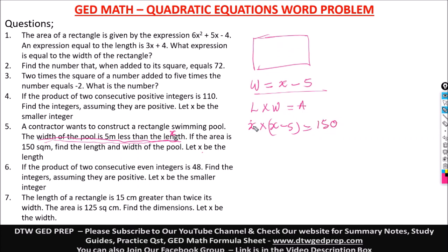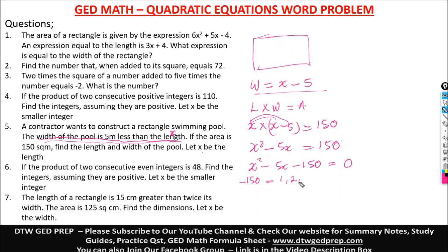Using L × W = Area: x(x - 5) = 150. Distributing: x² - 5x = 150. Bringing 150 to the left: x² - 5x - 150 = 0. The coefficient of x² is 1, so 1 × (-150) = -150. Factors of 150 include 1, 2, 3, 5, 6, 10, 15, 25, 30, 50, 75, 150.